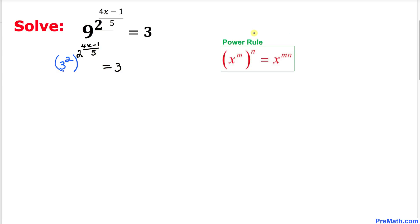Now let's use the power rule. According to this rule, the left hand side can be written as 3 to the power of 2 times 2 times (4x minus 1) divided by 5, equal to 3.